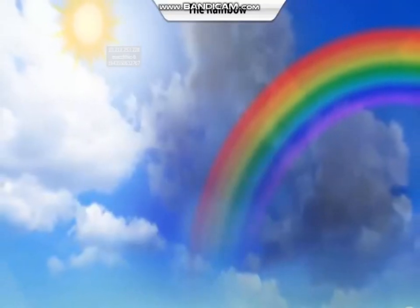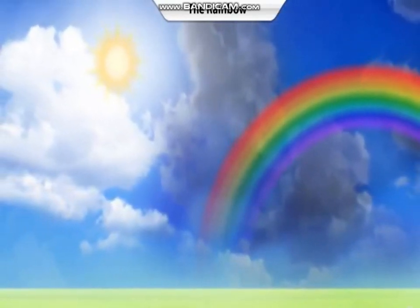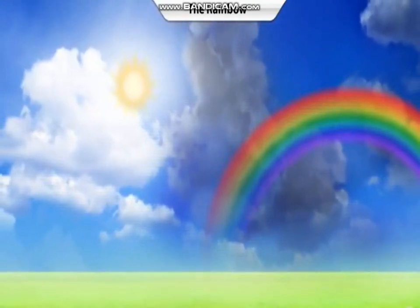Now that you know how light splits up into different colors, let's find out how a rainbow is created. A rainbow is formed in the sky with the help of two things: the sun and water droplets. These water droplets could be in the form of rain, cloud, or mist.